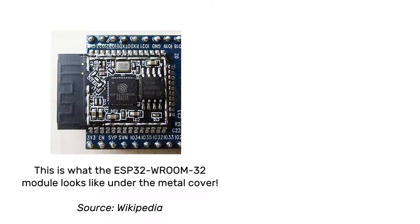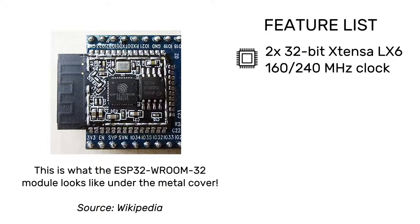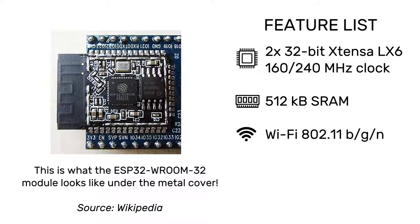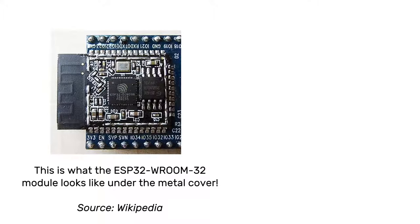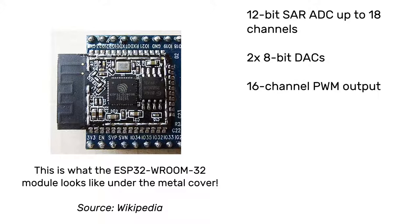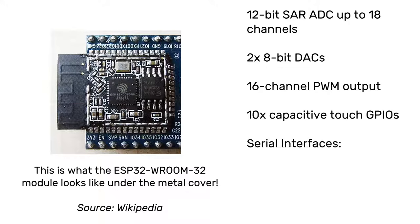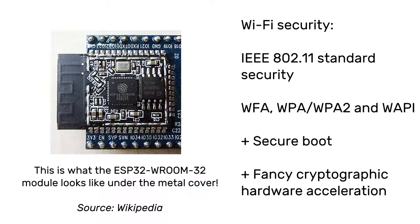Now let's see what this microcontroller is capable of by taking a look at what's under the hood. The ESP32 has 32-bit Tensilica Xtensa microprocessors clocked at 160 or 240 MHz with 512 kilobytes of SRAM. It has 802.11 BGN Wi-Fi and Bluetooth 4.2 with Bluetooth Low Energy support as well. It's also got a lot of peripherals: a 12-bit analog-to-digital converter, two 8-bit digital-to-analog converters, lots of PWM channels, ten capacitive touch sensing GPIOs, and a lot of serial interfaces — four SPI, two I2C, two I2S, and three UART buses. There's also some nifty built-in Wi-Fi security and encryption features too.